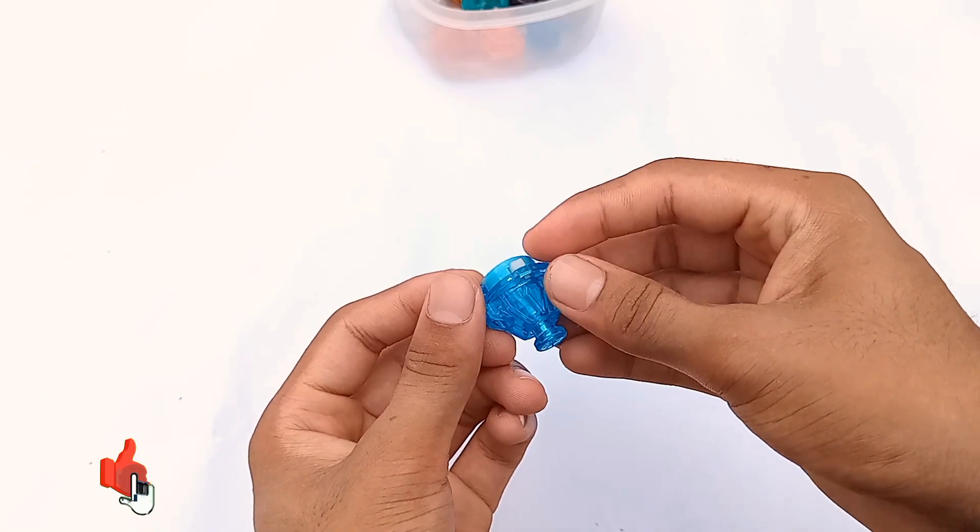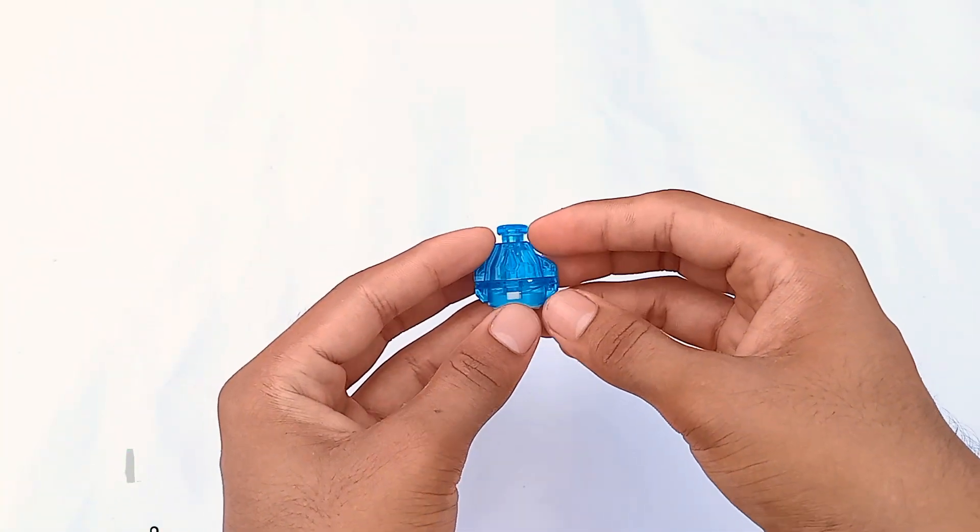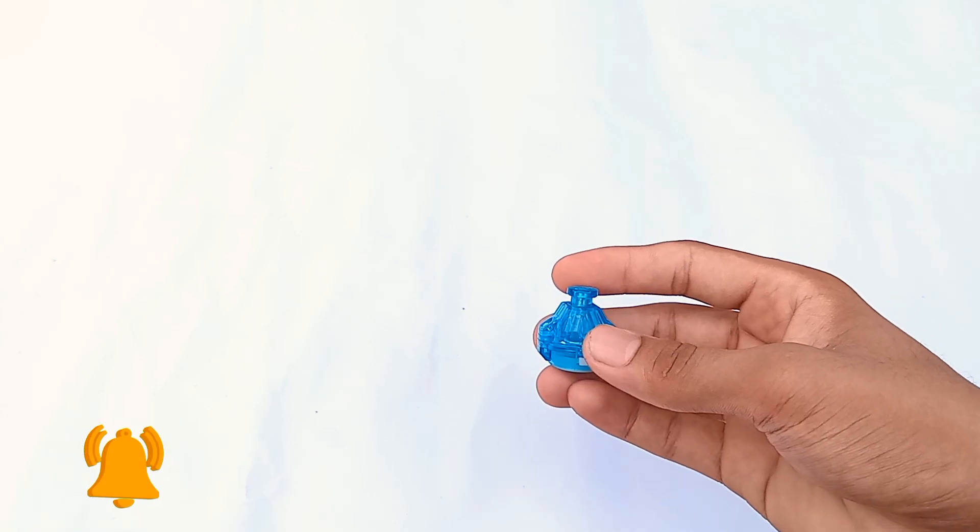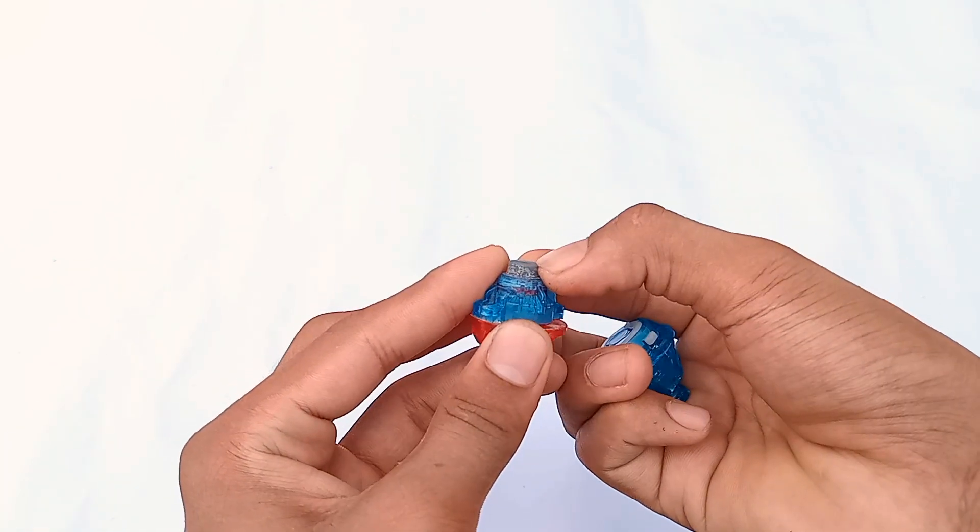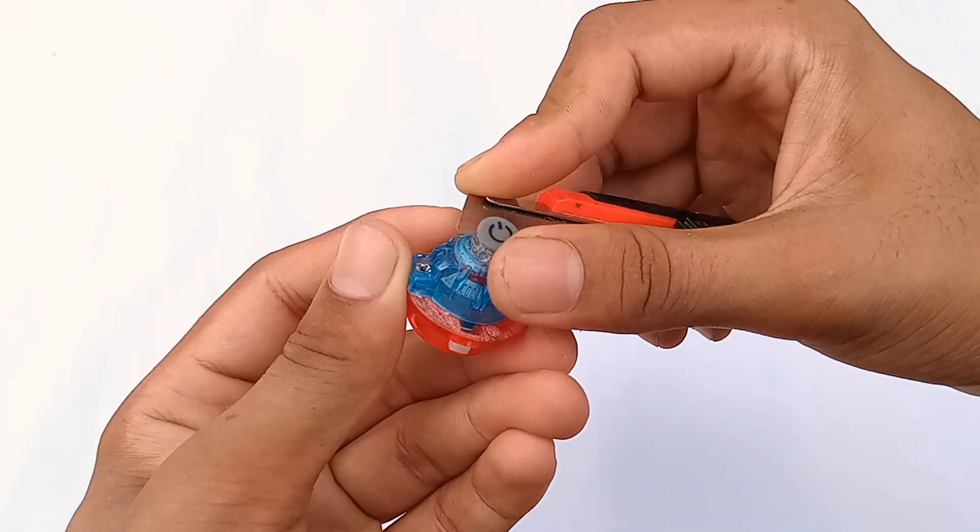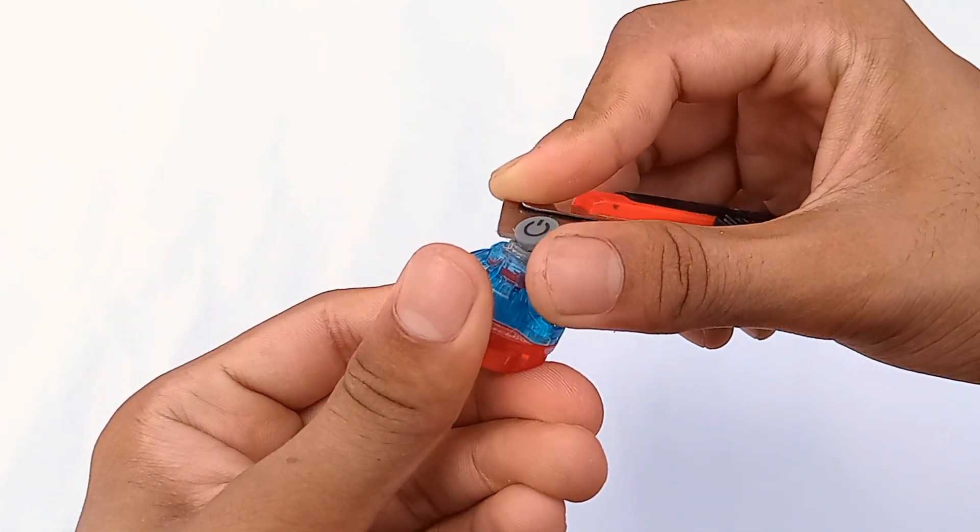Synon will show you how to do that. First, take the Volcanic driver from Winning Valkyrie. Now you need something that can create friction, like rubber. Synon is cutting out the rubber from his old modded driver. You can get this rubber switch from any TV remote, or you can check this video for more information.